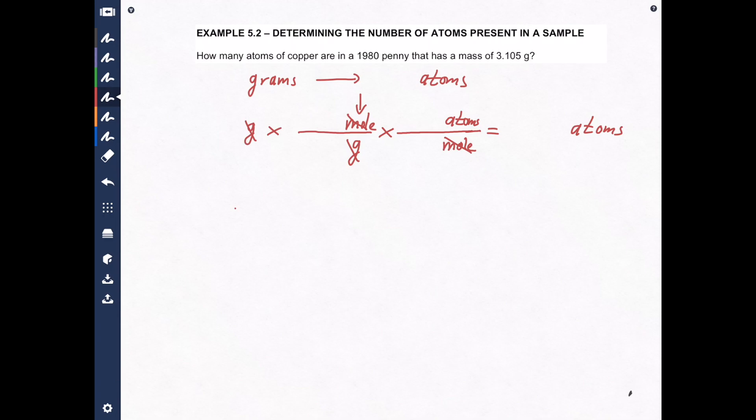Like always, we have to make sure we put the right numbers in the right place. It's not hard, it's not difficult. You just have to remember how to do it. This number here, 1980, is kind of irrelevant. It doesn't really matter. It's just the year the penny was minted. What matters is the mass right here. So let's put that right here: 3.105 grams.